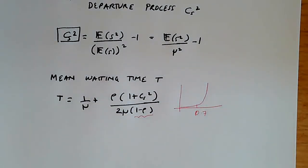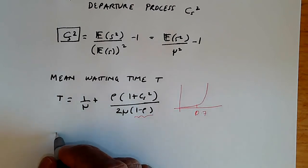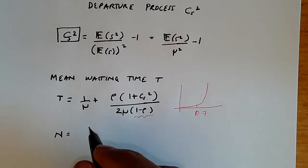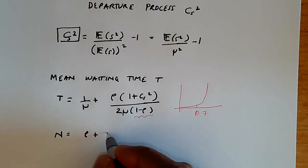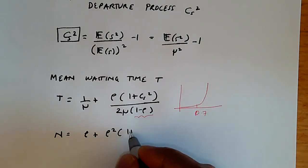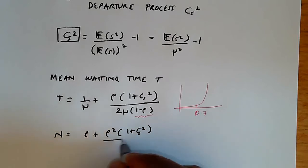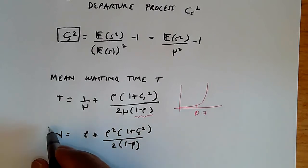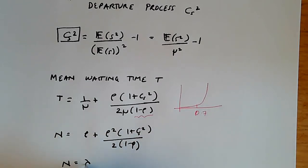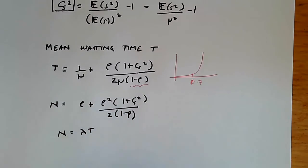The number of members in the queue, the queue size, is given by N = ρ + ρ²(1 + C_S²) / (2(1 - ρ)). This is derived from N = λT, which is Little's law.